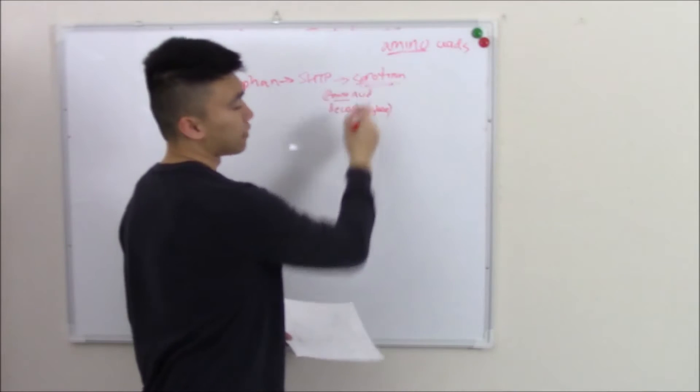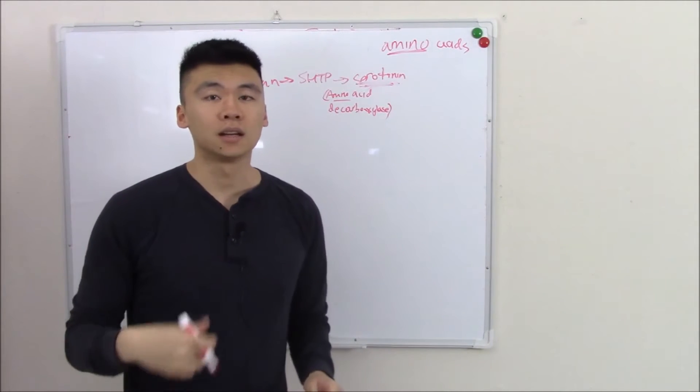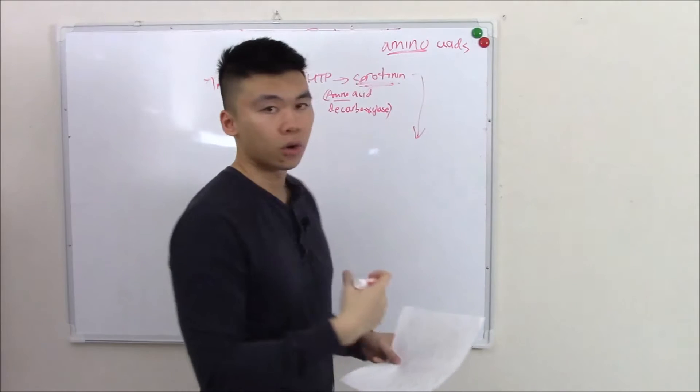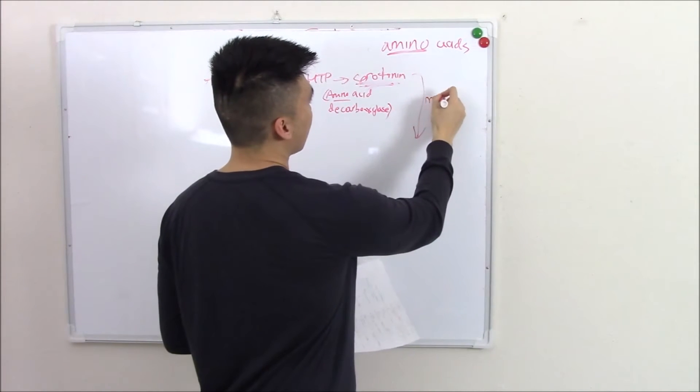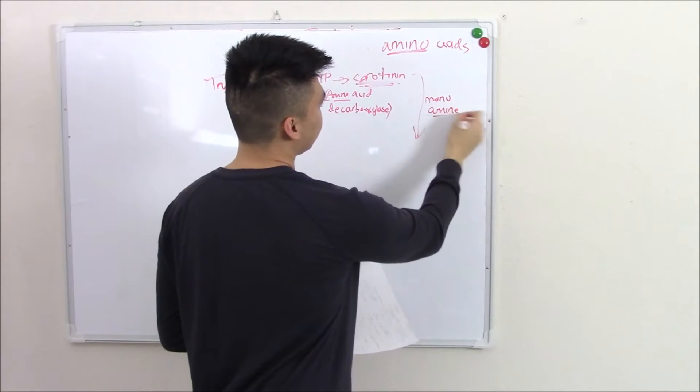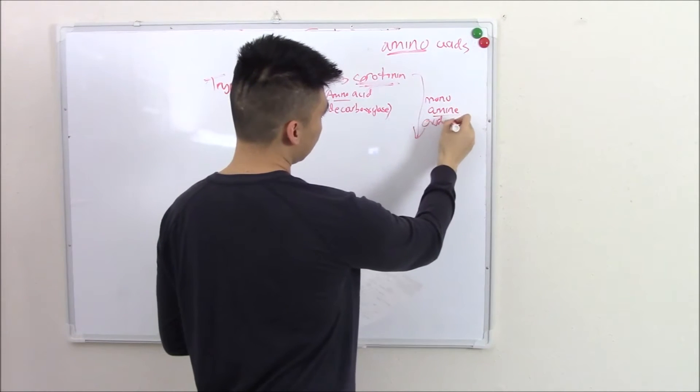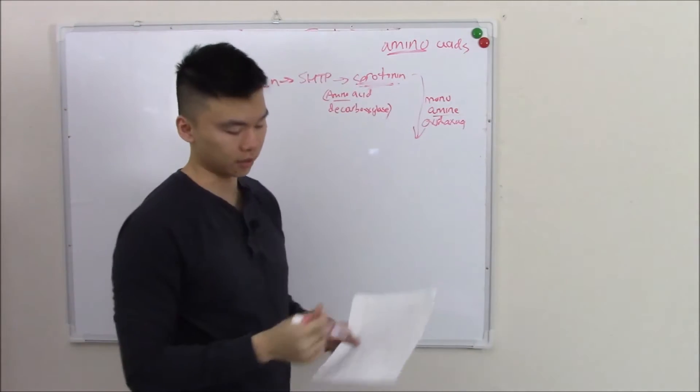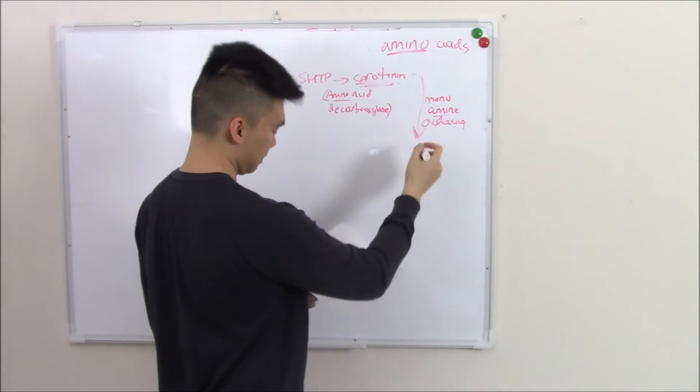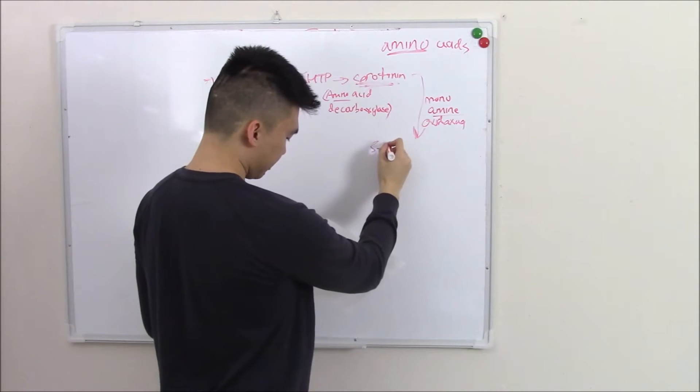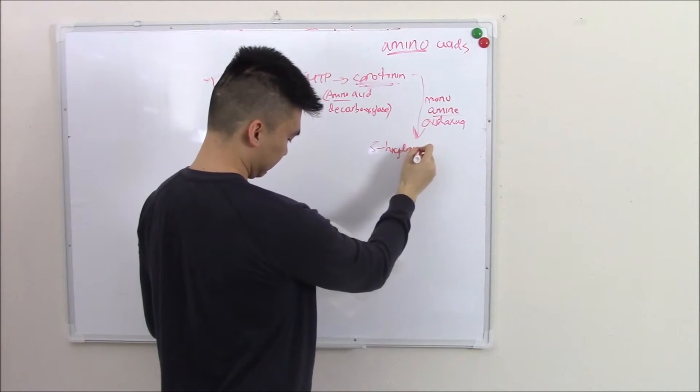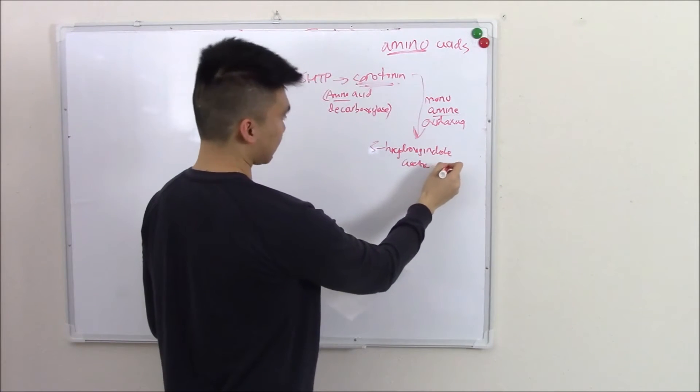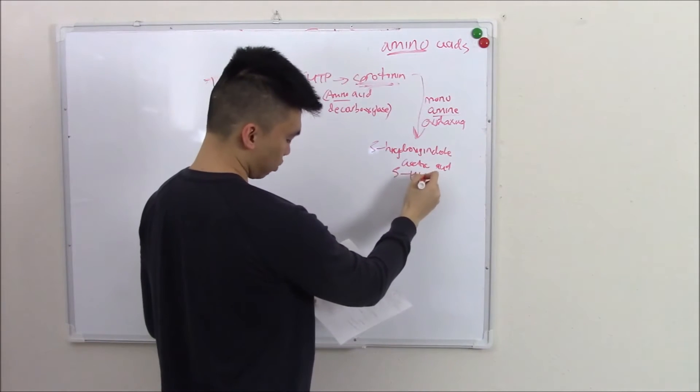If you have excess tryptophan or you don't need it anymore we have to degrade that. Things that degrade amino acid derivatives, one of the main ones is monoamine oxidase. And that helps degrade any amino acid derivatives like serotonin. Serotonin gets degraded into 5-hydroxyindoacetic acid, more commonly known as 5-HIAA.